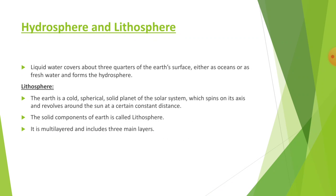The hydrosphere: liquid water covers about three-quarters of the Earth's surface, either as ocean or as freshwater, and forms the hydrosphere. The hydrosphere is the total amount of water on a planet, including water on the surface, underground, and in the air. On Earth, the liquid water exists on the surface in the form of oceans, lakes, and rivers.